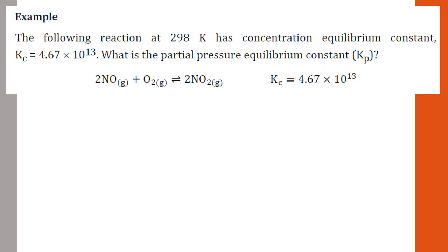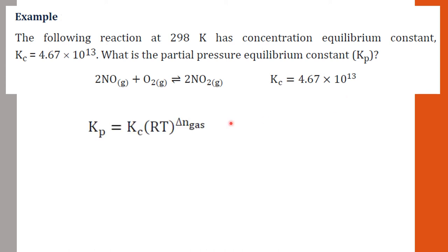Now let's look at a worked example on using Kc and Kp. Given the following reaction at 298 K with a concentration equilibrium constant Kc equal to 4.67×10¹³, the question asks: what is the partial pressure equilibrium constant Kp? We have the reaction and the value of Kc, and we know the temperature, so we can use the relationship Kp = Kc × (RT)^(ΔnGas).